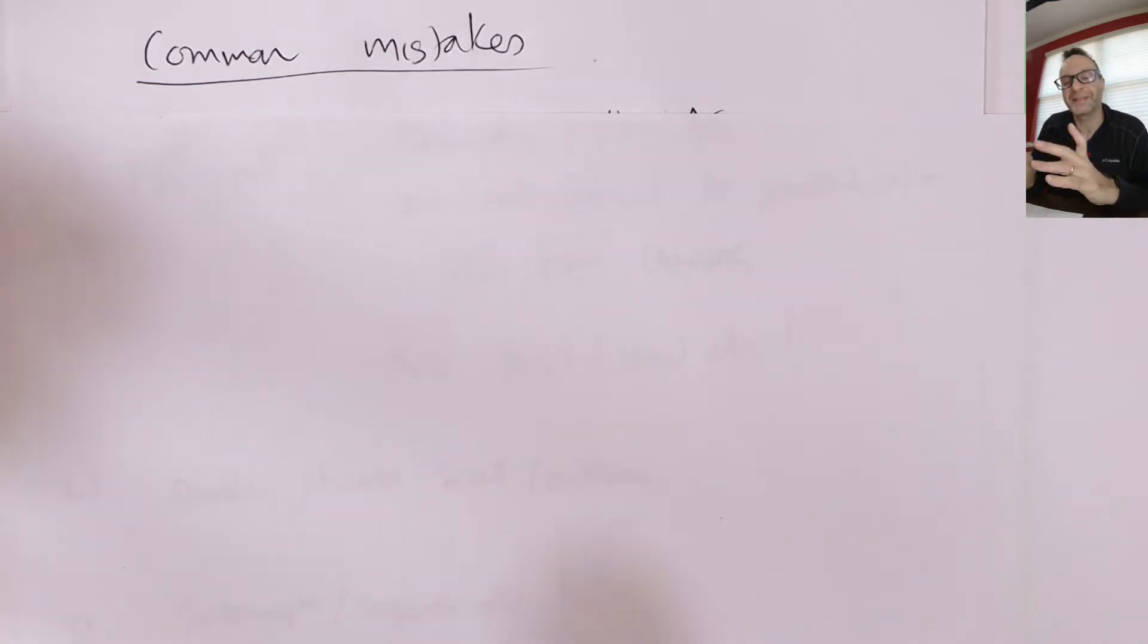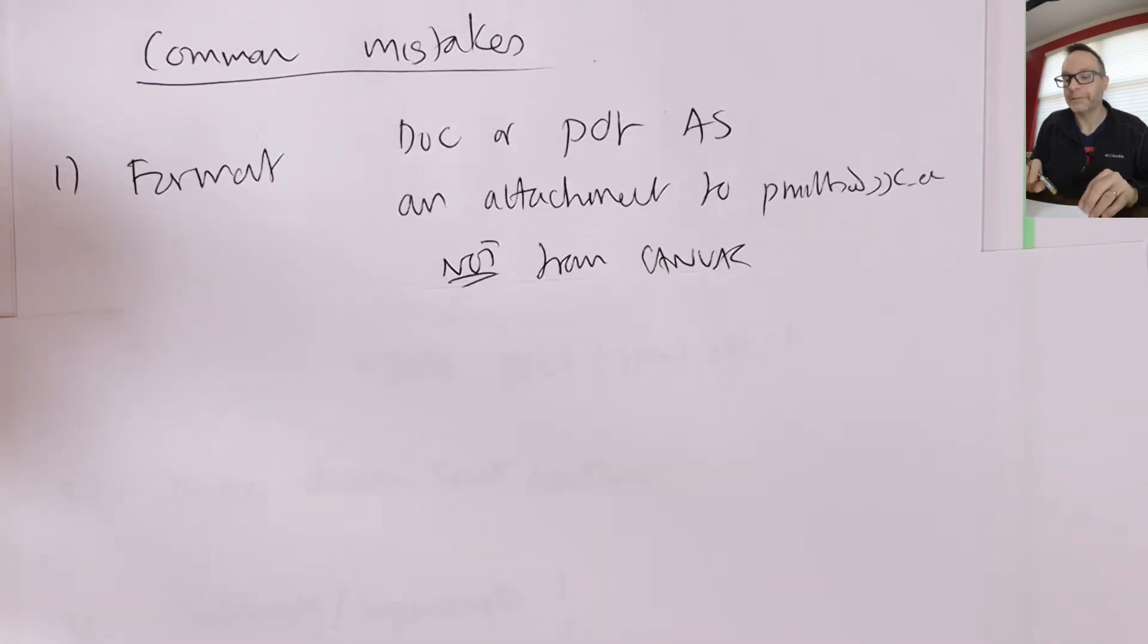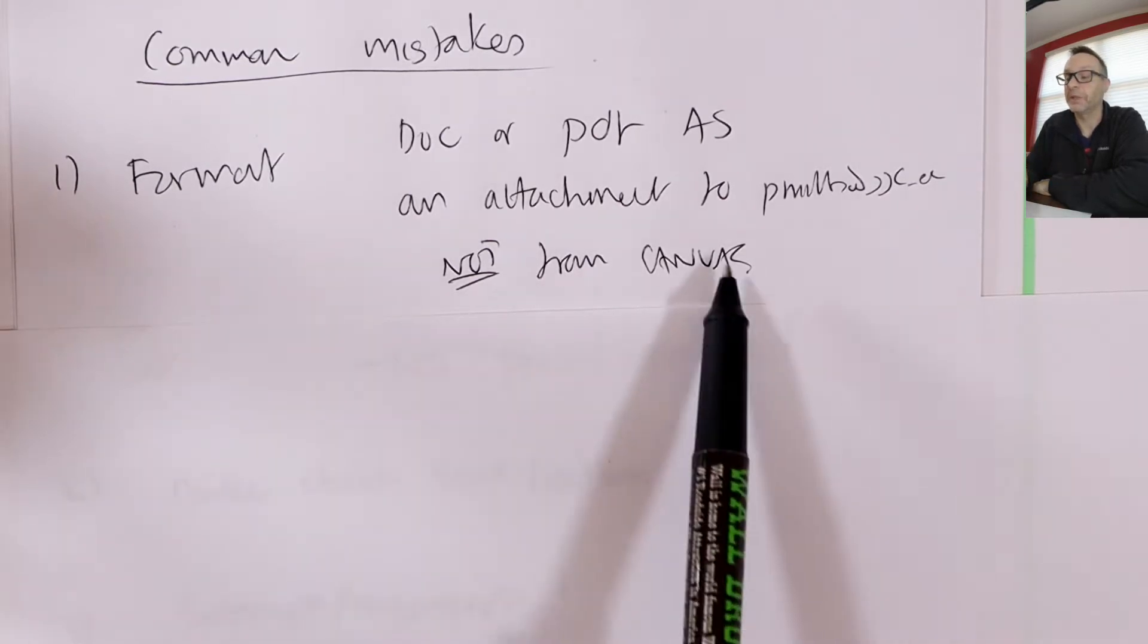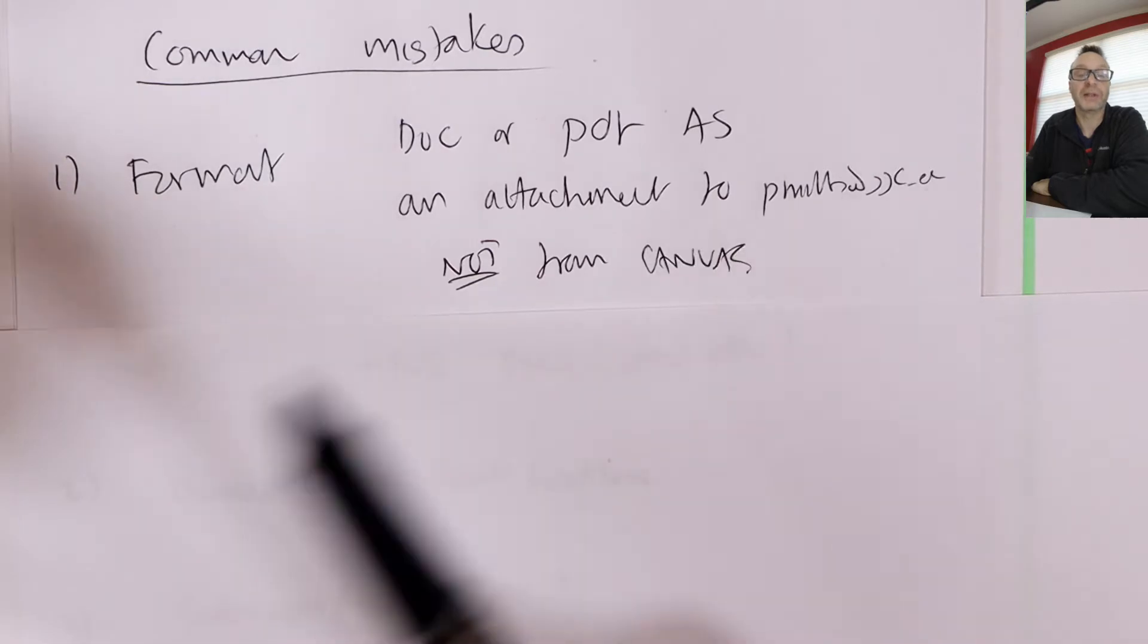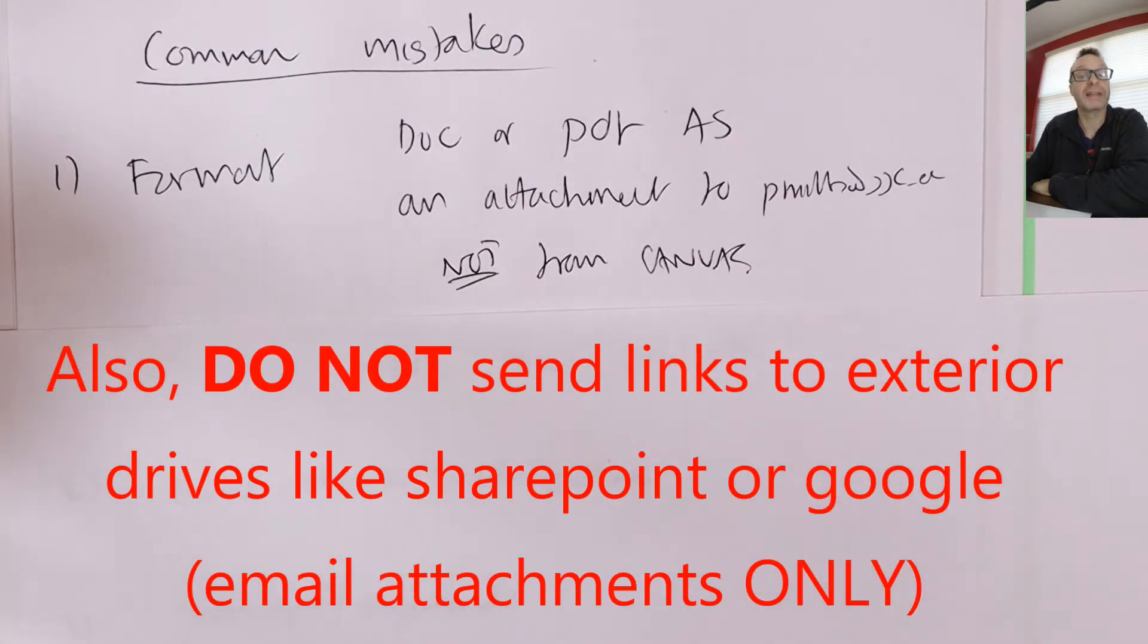Okay, so some things which could negatively affect your grade. Let's take a look. One, format. So I send you a doc and a PDF. Send me back as an email attachment, a doc or a PDF to pmills at jjc.edu. Now that's in the announcement area and the assignment area. So I'm just repeating what you see at the announcement and assignment area.